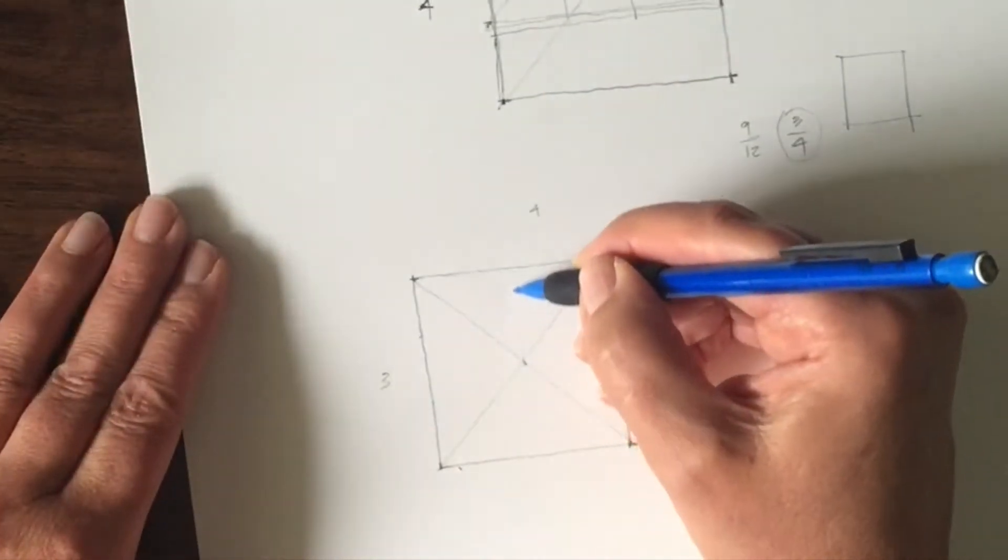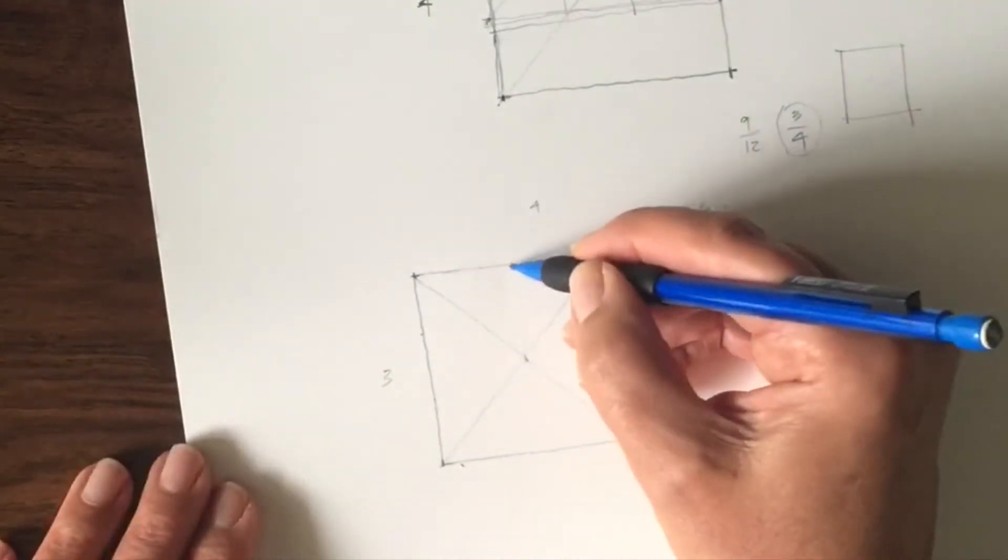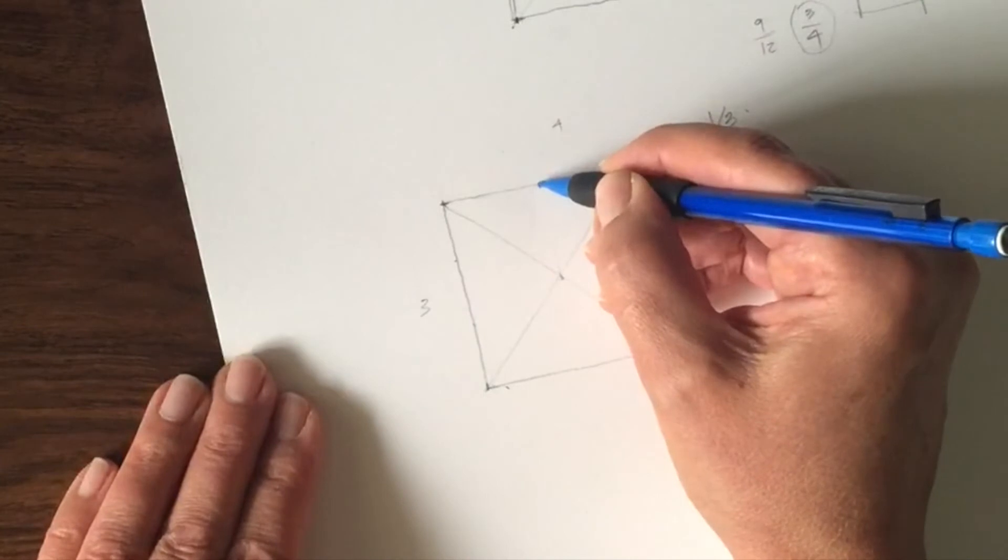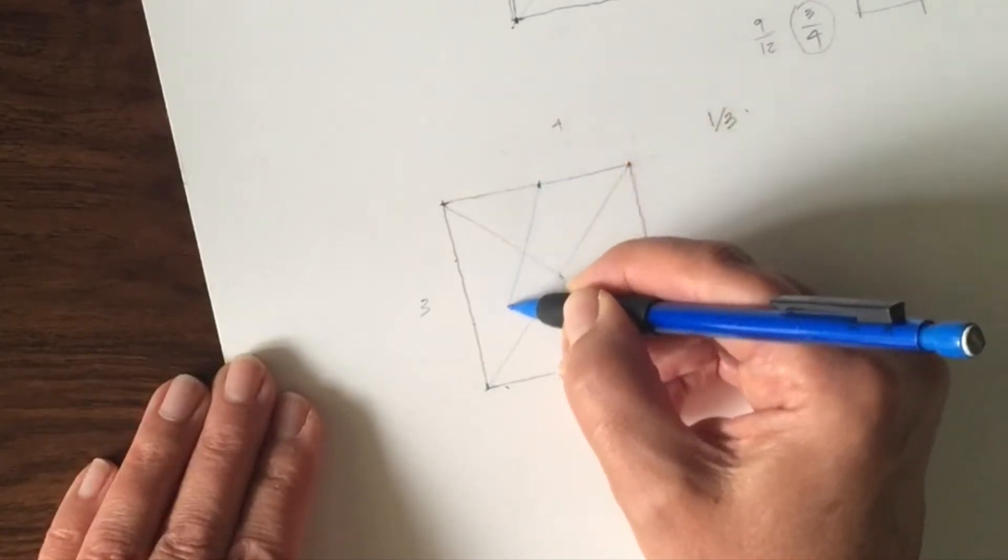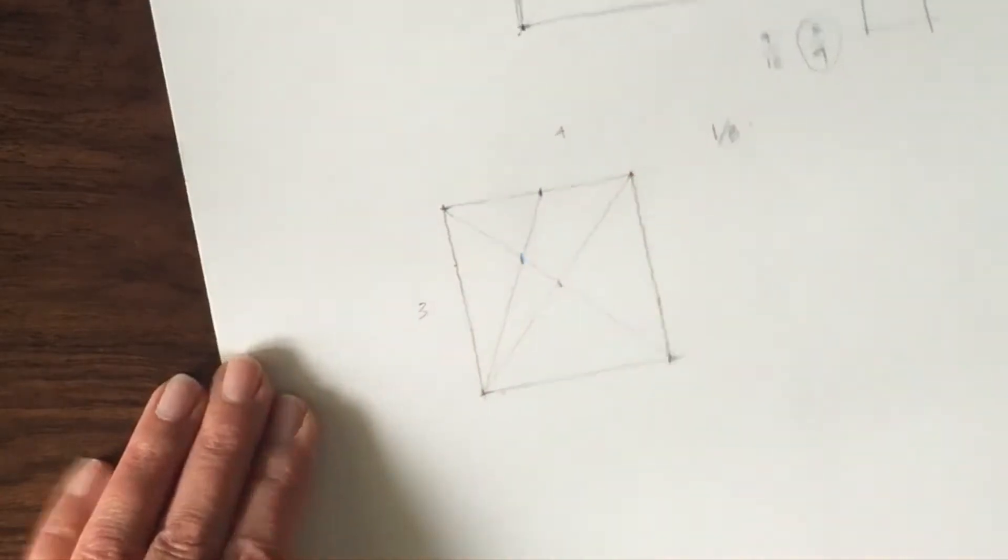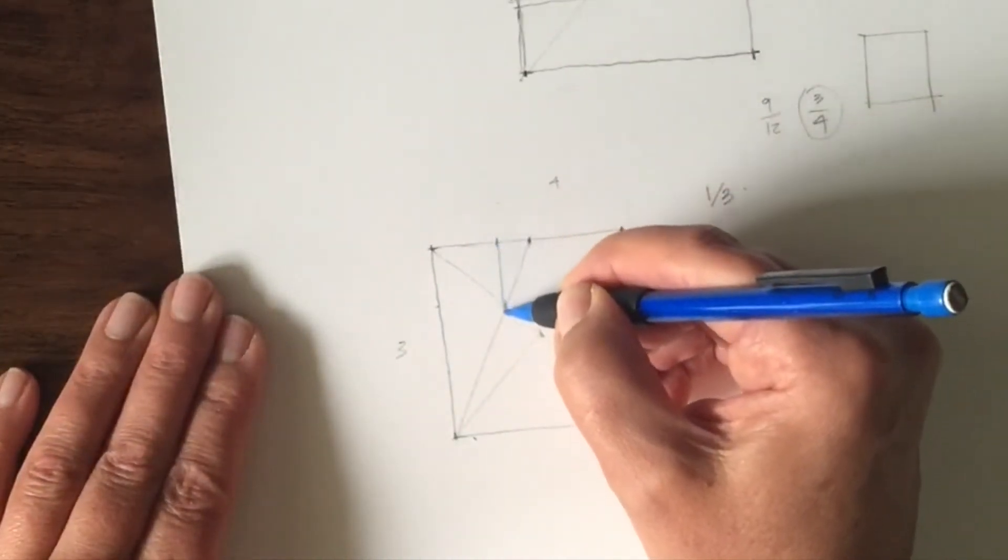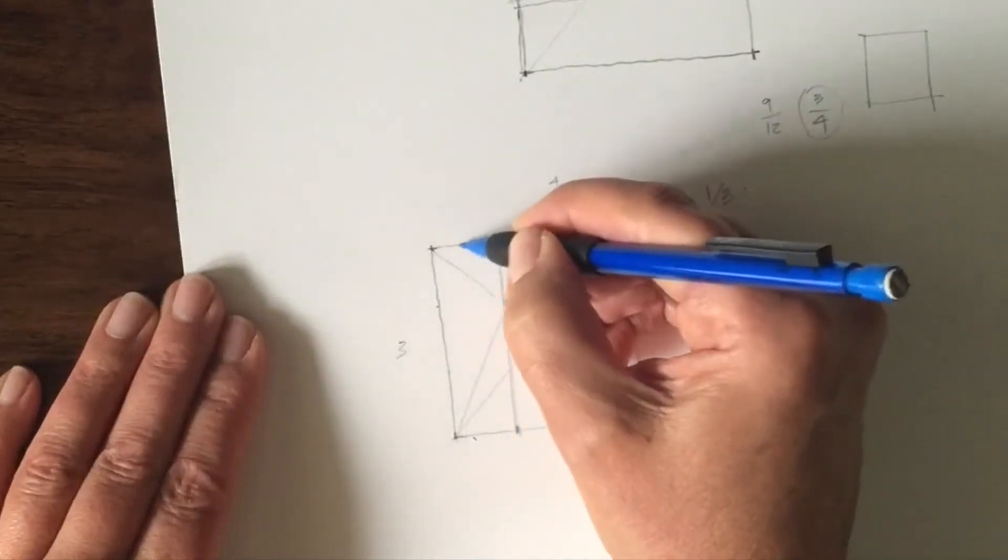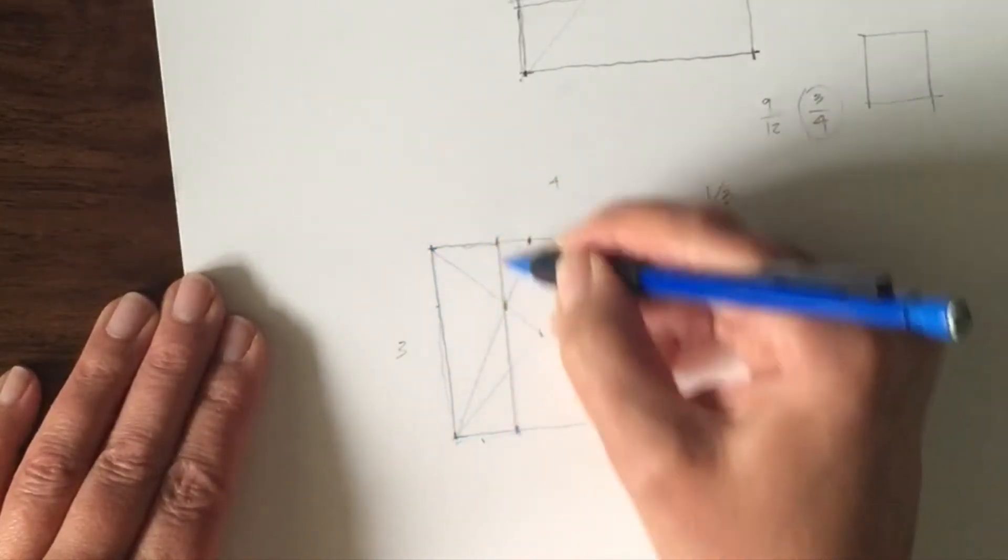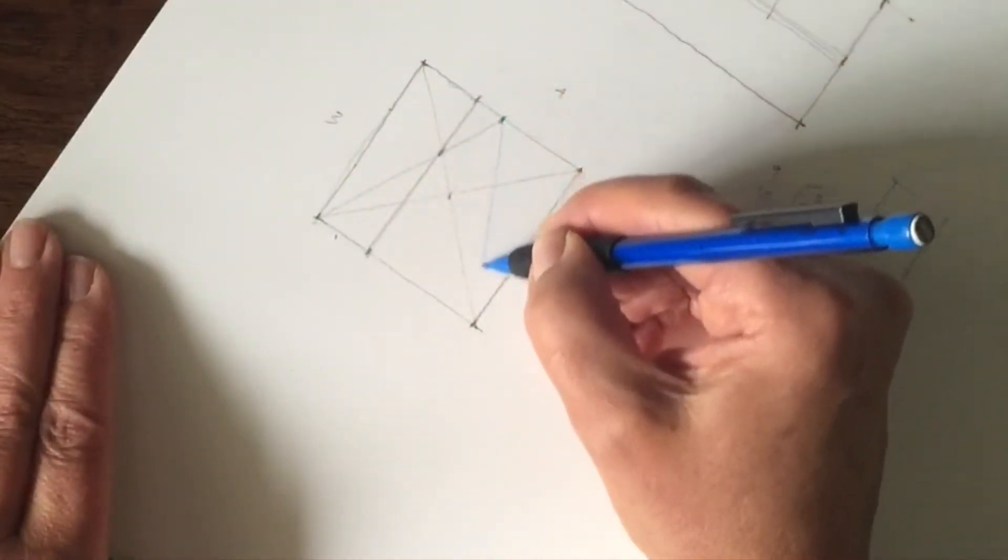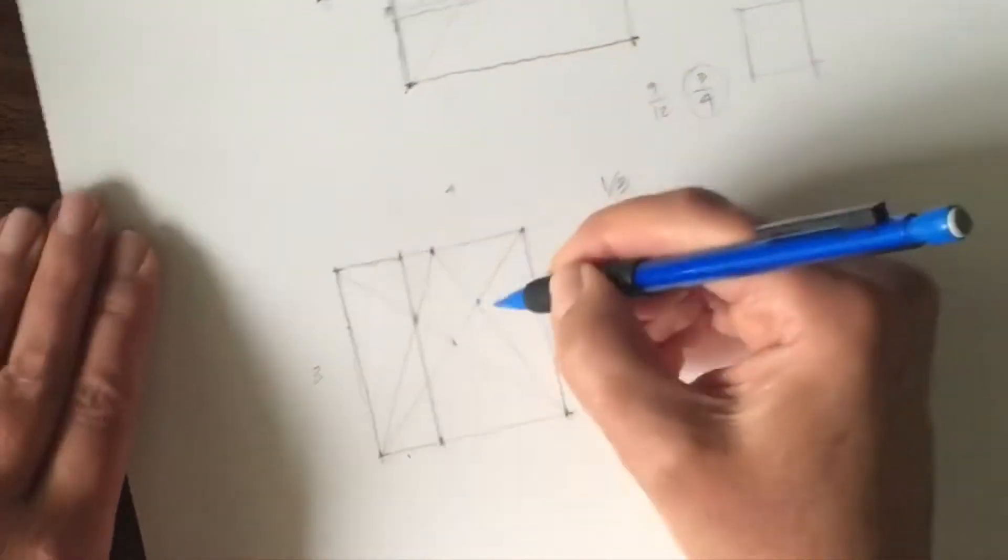That forms a really important point—that's the bisecting of that line. From there, I draw that diagonal from the center to the corner, and right where it hits that diagonal is a third. So I've now taken that square and created a region which is a third, and I can do it on the other side. There you go, you have another third.